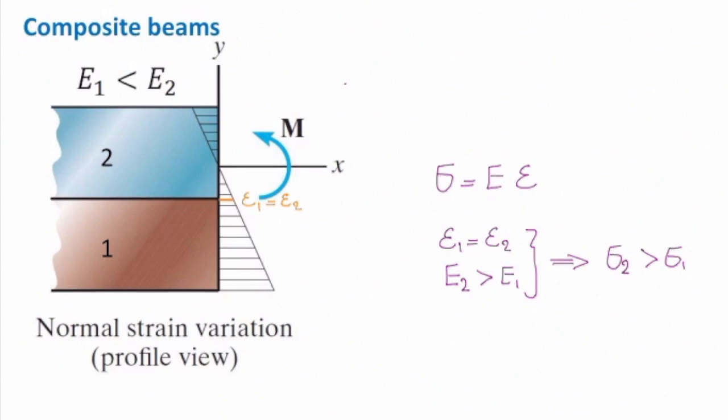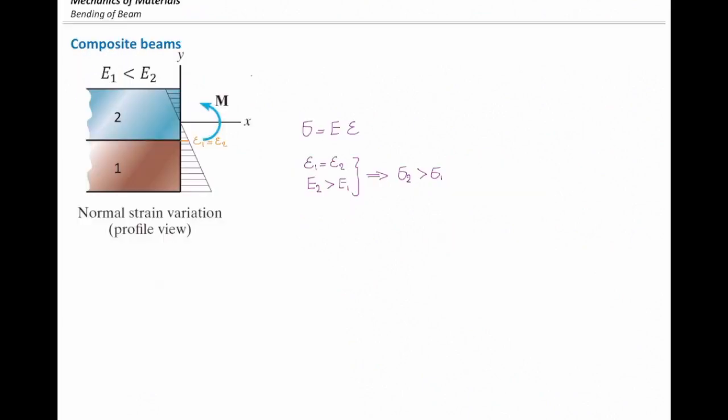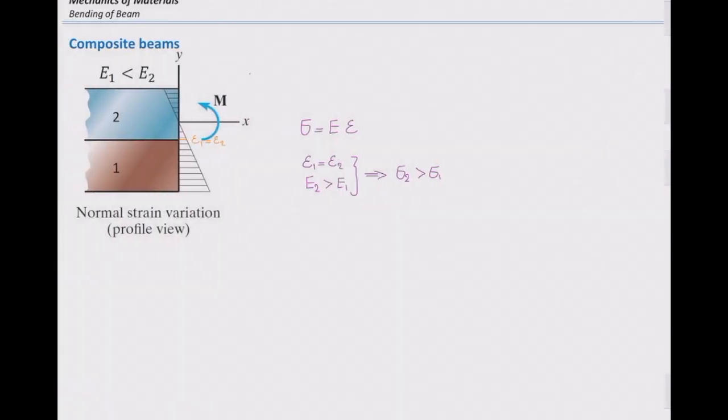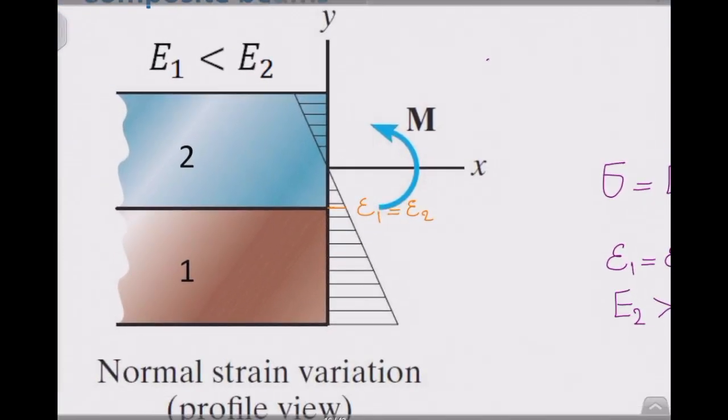Now let's focus on the bonding point where these two elements are connected together. Look at this point. At that point, strain of these two materials is similar to each other. Epsilon 2 is the strain of the top element at that point.